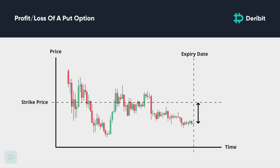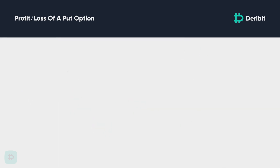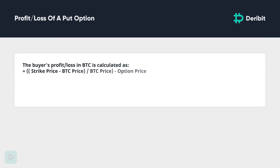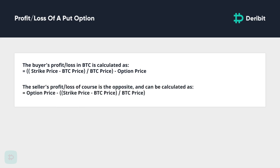As all balances on Deribit are in cryptocurrency, the difference in dollars will of course be converted to BTC or Ethereum at the price of the underlying asset. The buyer's profit and loss in Bitcoin is calculated as: (strike price minus BTC price) over the BTC price, minus the option price. The seller's profit and loss is the opposite: option price minus (strike price minus BTC price) over the BTC price.